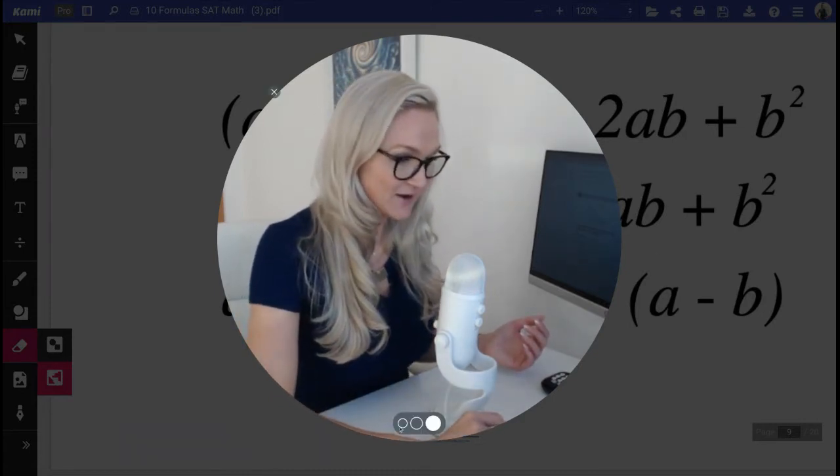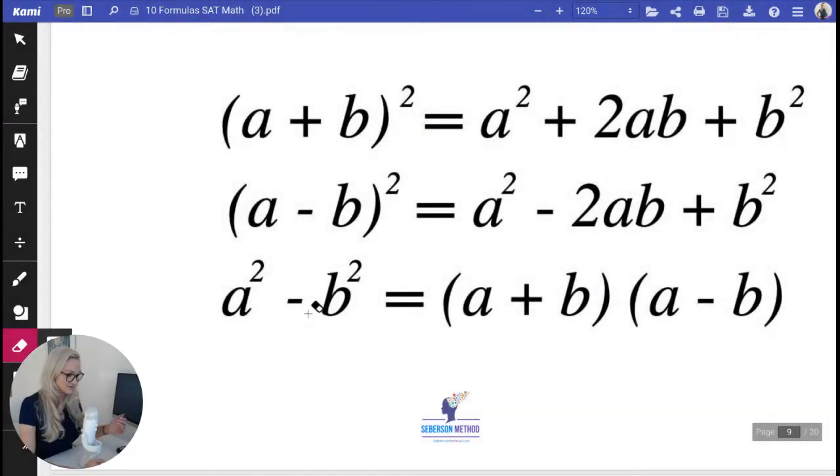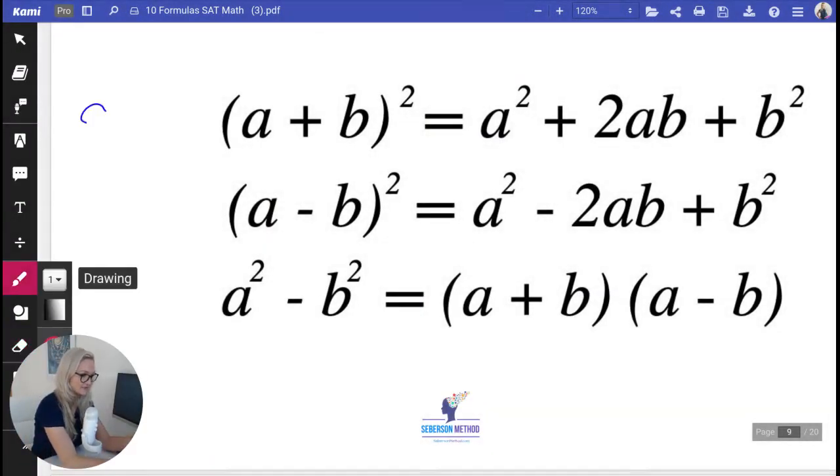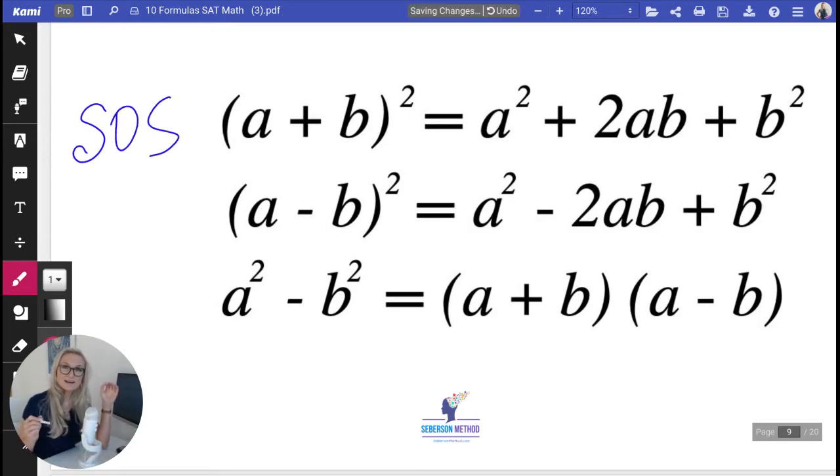The first identity I want to talk to you guys about is the first one here. I like to call it SOS. SOS stands for square of a sum. Inside the parentheses right here we have a sum, a plus b, and then we have a square. So therefore it's square of a sum.